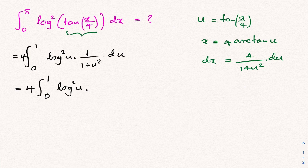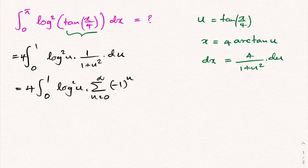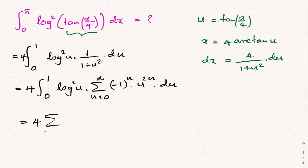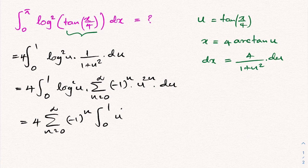We can represent 1/(1 + u²) as an infinite series: the sum from n = 0 to infinity of (-1)ⁿ·u^(2n). Substituting and switching the sigma notation and integral sign, we get 4 times the infinite sum from n = 0 to infinity of (-1)ⁿ times the integral from 0 to 1 of u^(2n)·ln²(u) du.